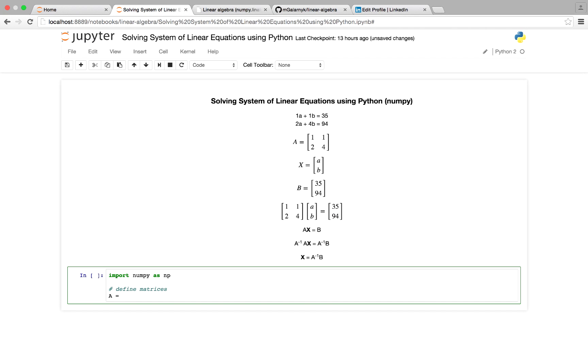So A equals np.matrix. Matrix is a method of numpy. And going across the first row of A, again, we have 1, 1. And in the second row, we'll have 2, 4. And if you want to check to make sure you entered it right, you can just print it out.